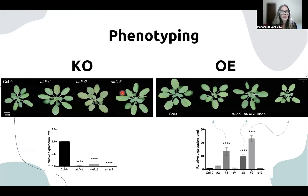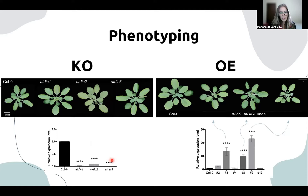The tDNA insertion mutant lines revealed a highly drastic impact on DIC1, DIC2, and DIC3 expression. On the other hand, the overexpression lines show different levels of relative expression of DIC2.